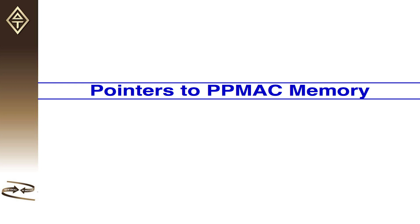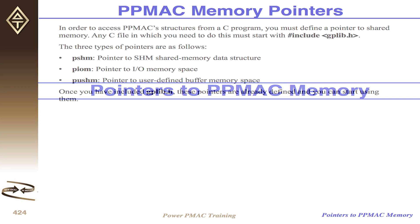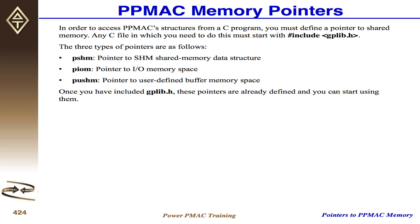Let's talk about getting at PowerPMAC memory from C. There's the PSHM pointer, which is a pointer to shared memory — all memory that's on the PMAC CPU proper, local to that device. If you want to get at memory on other hardware, like the Accessory 6080 card or your Access Interface card, Accessory 2043, you need to use PIOM, which is a pointer to IOMemory space — a different block of PMAC's brain.